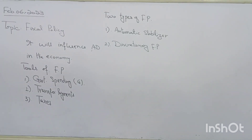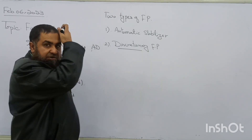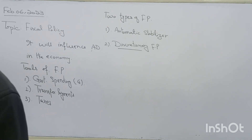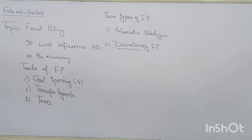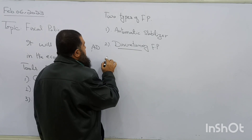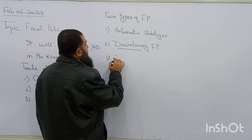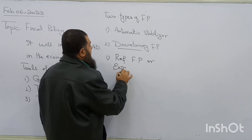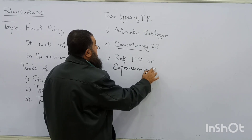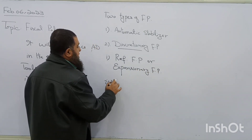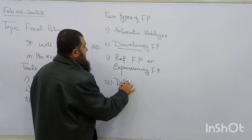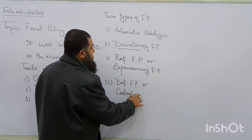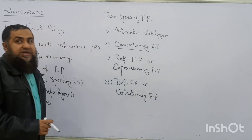Discretionary fiscal policy is where the government actively decides how much to spend on development and how much taxes to collect from the economy. It has two types: one is reflationary or expansionary fiscal policy, and the other is deflationary or contractionary fiscal policy.